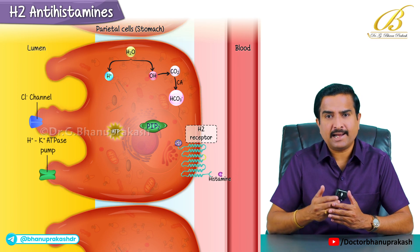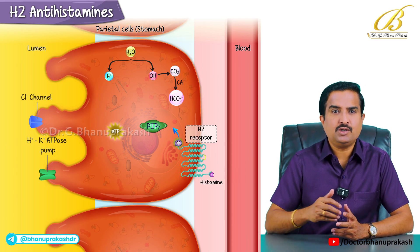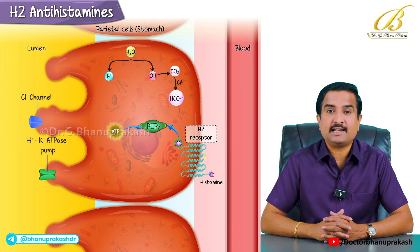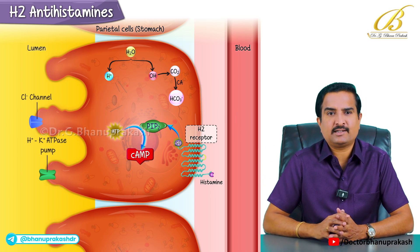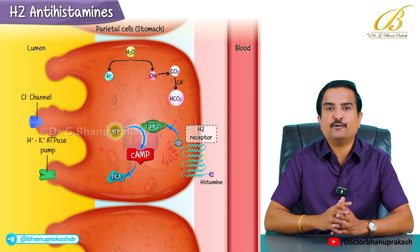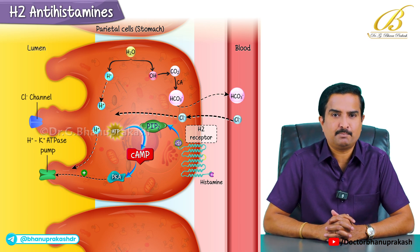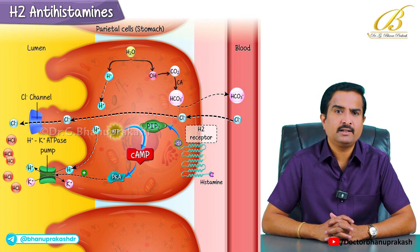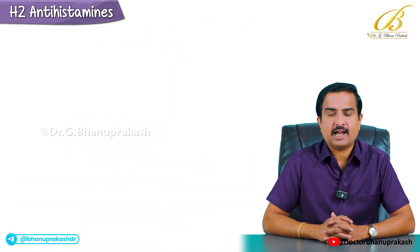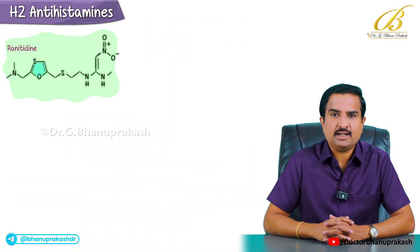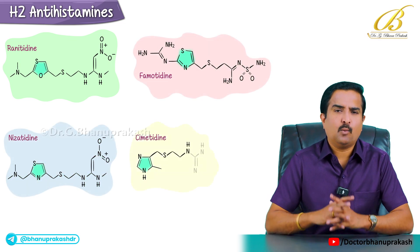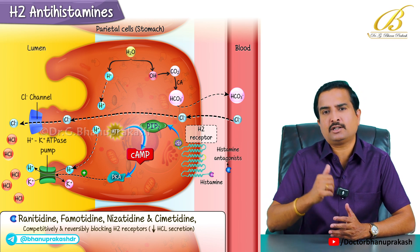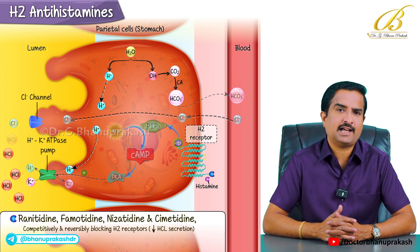Normally, when histamine binds to these receptors, it activates the Gs protein-coupled pathway, which is stimulatory, leading to an increase in cyclic AMP levels, which activates protein kinase A. There will be phosphorylation of the ATPase pump, and this pump is responsible for secreting gastric acid. H2 blockers like ranitidine, famotidine, nizatidine, and cimetidine work mainly by competitively and reversibly blocking these H2 receptors, thereby reducing gastric acid secretion.